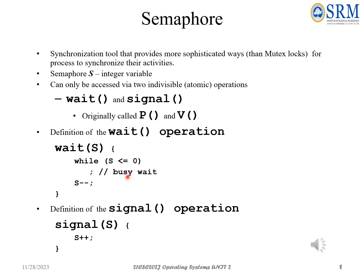Coming to the signal operation: signal of S. If the process is completed and the resource is free, then we can use that resource using some other process. So we increment the value of S here in the signal operation.